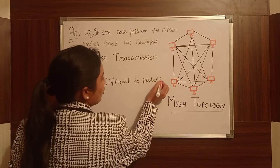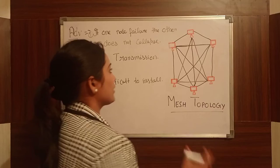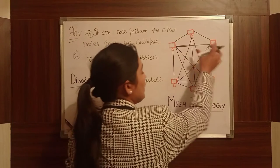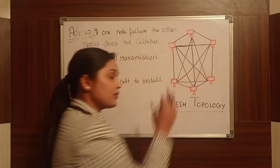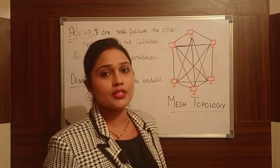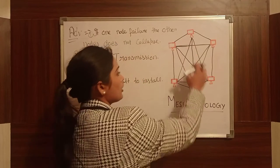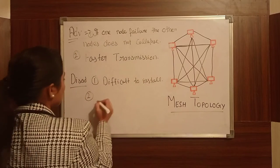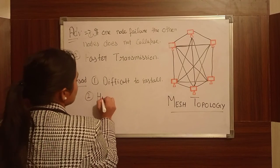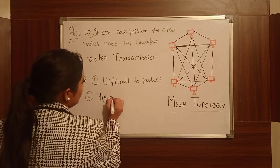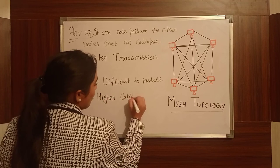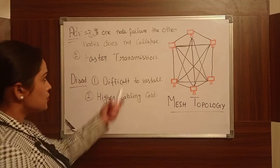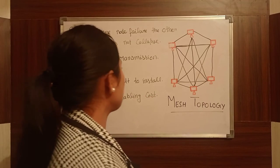Installation is difficult because many cables are used. Since multiple paths mean many cables are used, this leads to higher cost. So the second disadvantage is higher cabling cost.